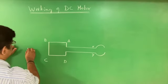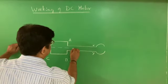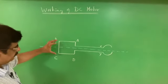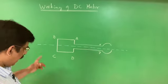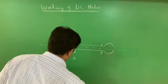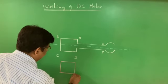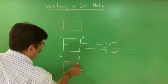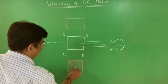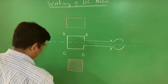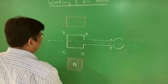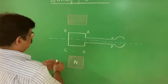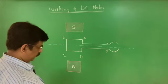The coil is placed between the poles of a powerful magnet — one is the north pole and another is the south pole. Always write the diagram neatly because you have to score marks. These two are the magnet poles — north pole and south pole. The copper split rings are attached to two carbon brushes.